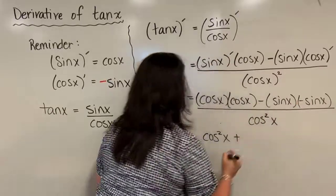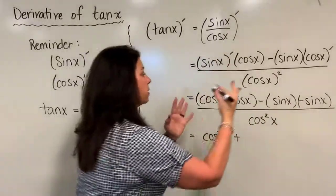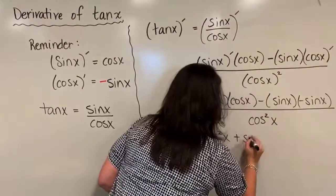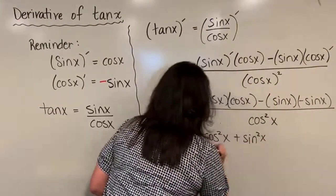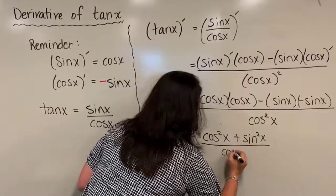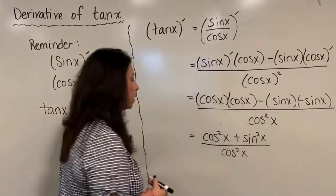The negatives will make us have a plus up here. And then sine x times itself will give me sine squared x. And then of course I still have all of that being divided by cosine squared x.